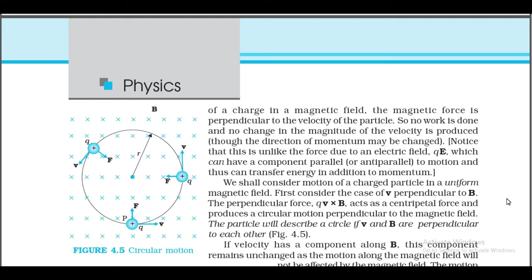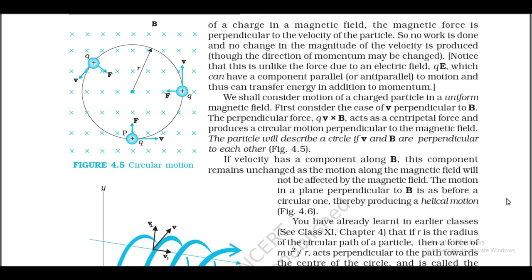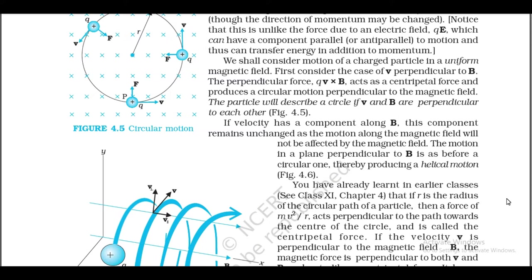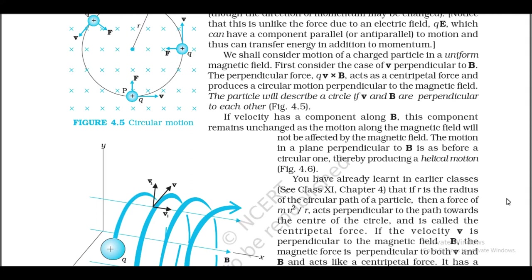First consider the case of v perpendicular to B. The perpendicular force qvB acts as centripetal force and produces circular motion perpendicular to the magnetic field. The particle will describe a circle if v and B are perpendicular to each other. If velocity has a component along B, this component remains unchanged as motion along the magnetic field is not affected by the magnetic field. The motion in a plane perpendicular to B is circular, thereby producing a helical motion.